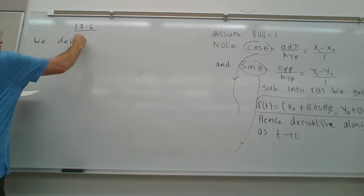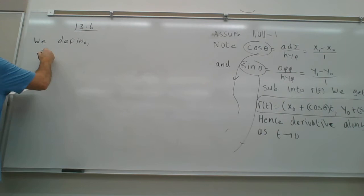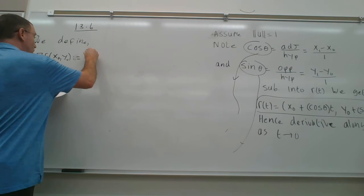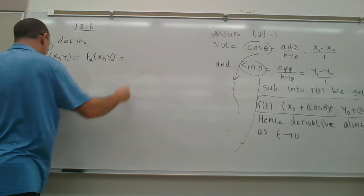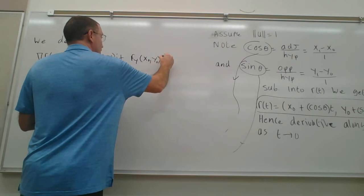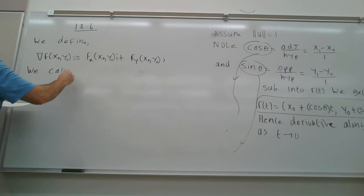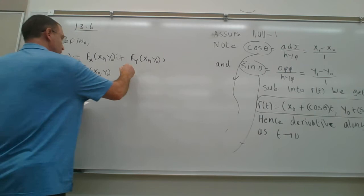We make another definition. We define the nabla (upside-down triangle) symbol ∇f(x₀, y₀) to mean the partial derivative with respect to x evaluated at (x₀, y₀) times i, plus the partial derivative with respect to y evaluated at (x₀, y₀) times j. We call this the gradient.